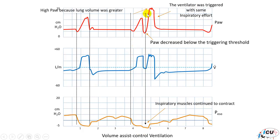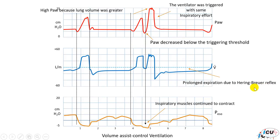The second breath is given with higher pressure due to the high volume already in the lung from the stacked breaths. Now, because of the large tidal volume, in order to prevent hyperinflation the body has a reflex called the Hering-Breuer reflex, which will inactivate any further inspiratory efforts. The inspiratory drive is inhibited, allowing for a prolonged expiration to exhale the tidal volume that was inhaled during these two stacked breaths.